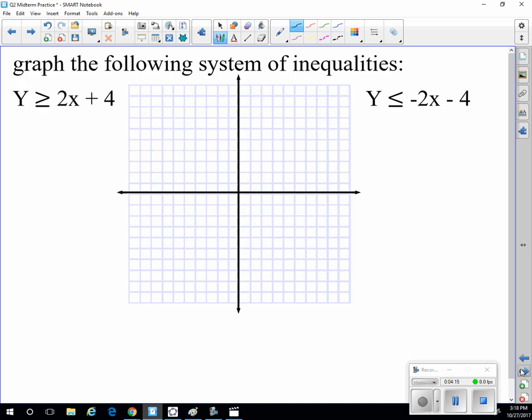Graph the following system of inequalities. That means it has to satisfy both this one and this one. So this one has a y-intercept of 4, so if I say that each one of those squares is 1, then I would start 4 squares up from 0.